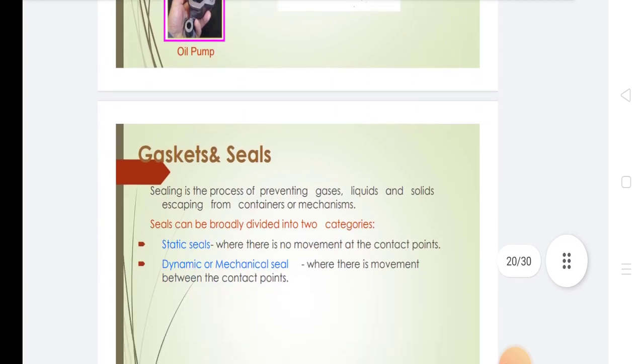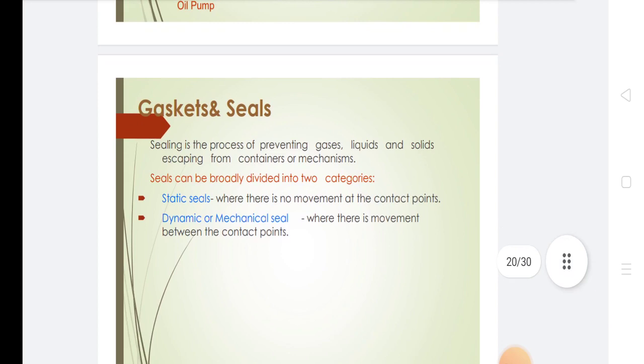Gaskets and seals: Sealing is the process of preventing gases, liquids, and solids from escaping from containers and mechanisms. Seals can be broadly divided into two categories: static seals and dynamic or mechanical seals.